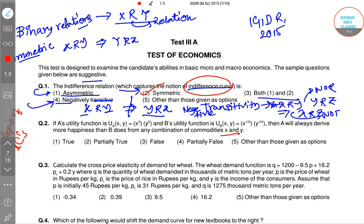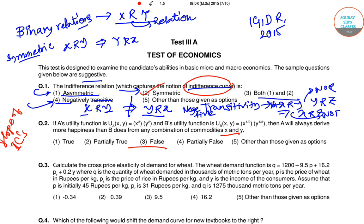Moving back to the question, which asks whether the statement is true, false, partially false, or other — this is false, because we cannot say A always derives more happiness than B from any combination of goods X and Y. They are trading the two goods at the same rate. So option 3 is the correct answer. In this video I have solved the first two questions; in upcoming videos I will be solving other questions of this paper and all other papers of IGIDR. I hope this will be helpful for your exam — until next time, thank you.